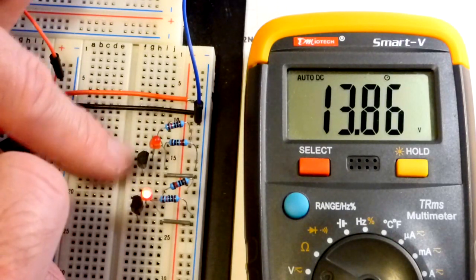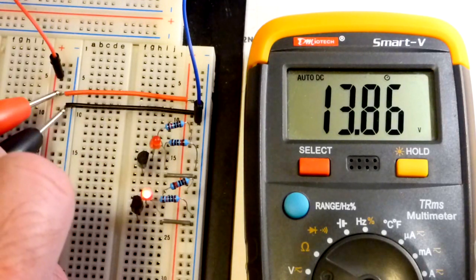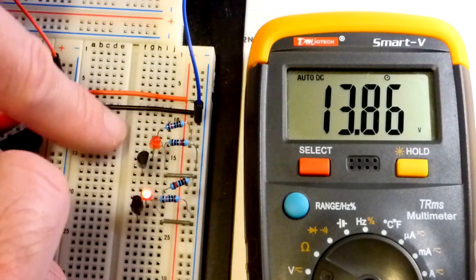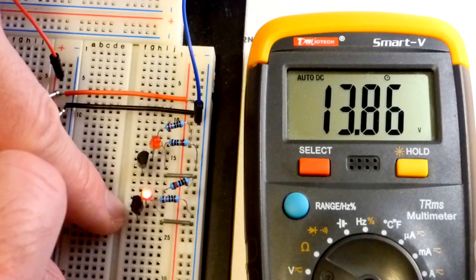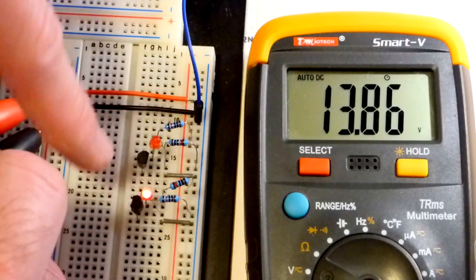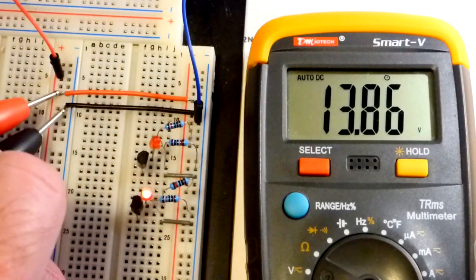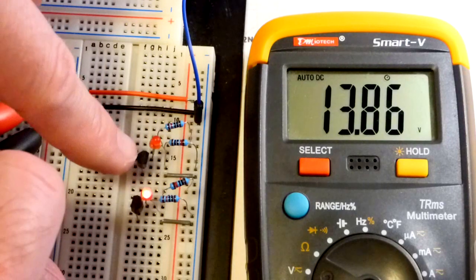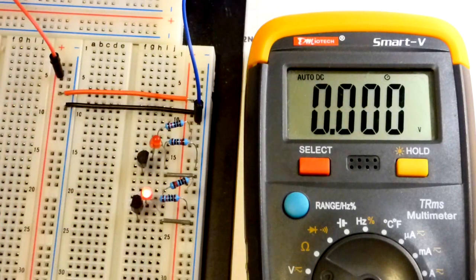So the 2N3904 is rated to block or to have about 40 volts across it and work properly from collector to emitter. Here you can see at 13, we are already definitely passing current in that one, whereas we are not on that one. So that's one failure.